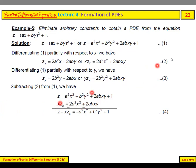After canceling the 2abxy terms, we get z - xz_x = -a²x² + b²y² + 1, which is equation (4).